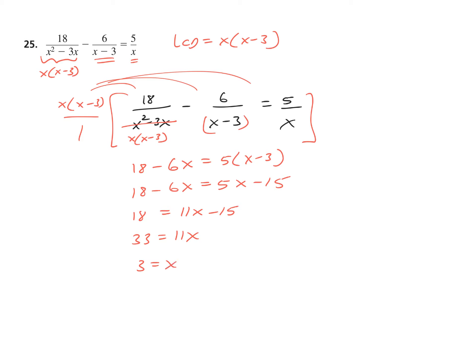Now let's look at our denominators — that's our only solution, and you might already see what's going on. The 3 would give us a zero denominator here and here. So no way, no chance, no how. We have an equation that looks good and the algebra looks good, but the final solution is that there is no solution. You could write X equals zero with a slash through it — the mathematical term for the empty set or null set, or undefined. That's the correct conclusion.